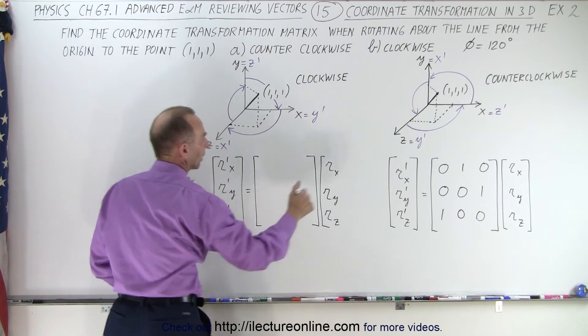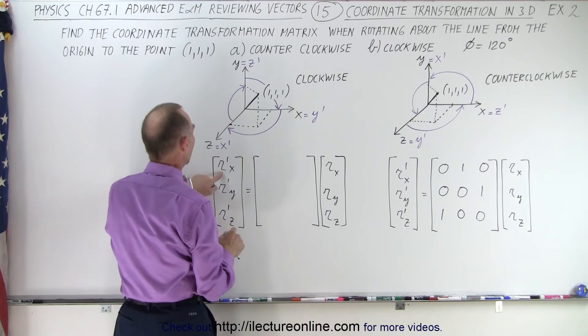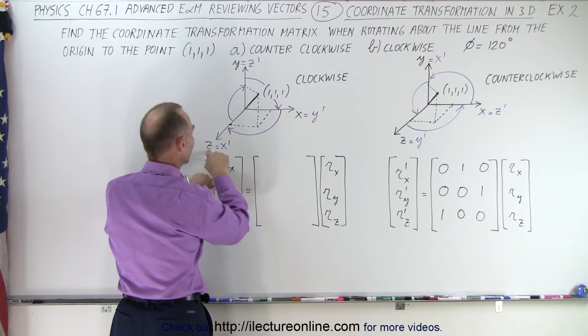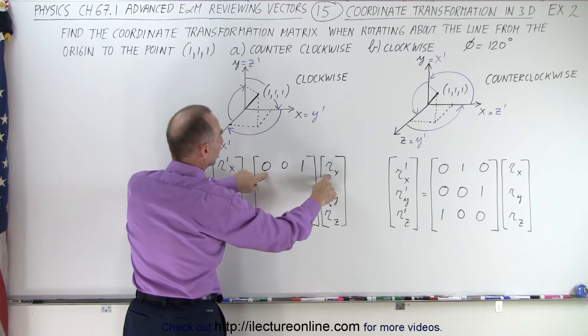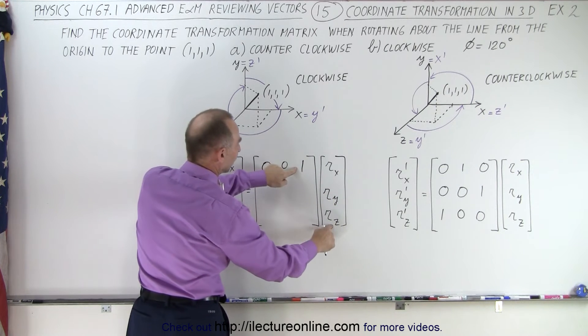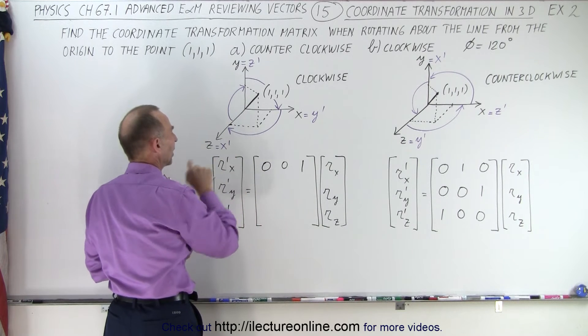So what do I need here? Let me finish that here like that. First of all, R prime X, X prime needs to be Z. So I need a 1 over here and 0 and 0. So 0 times this plus 0 times this plus 1 times RZ will become my new R prime X. So Z becomes X prime.